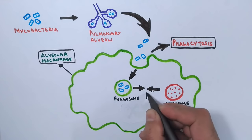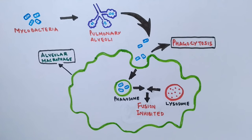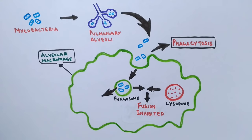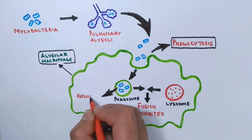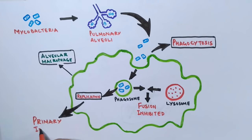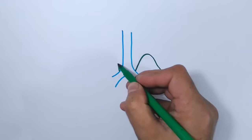But in the case of tuberculosis, the phagolysosome is not formed when the pathogen is Mycobacterium tuberculosis. The fusion is inhibited and the mycobacterium remains protected inside the macrophages without being detected by the immune system — like a Trojan horse. Ultimately, the bacteria replicates inside the macrophages, establishing the primary infection.